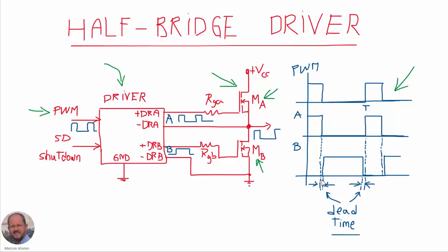So we have here these intervals, at this point and also at this instant, in which before activating transistor B, we leave a small dead time after the turning off of transistor A. And same thing, before turning on transistor A, we have a dead time after turning off transistor B. So this is the timing that we need to implement.